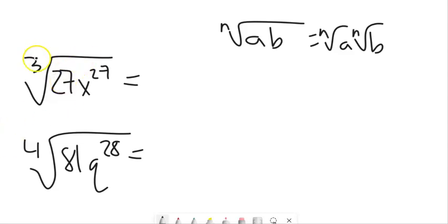So the cube root of 27, that's 3. And the cube root of x to the 27th, right? What to the third gives us x to the 27th? It's got to be 9 because 9 times 3 is 27.